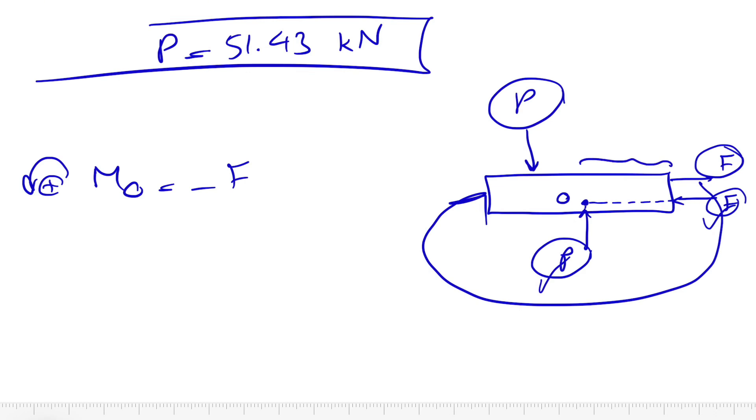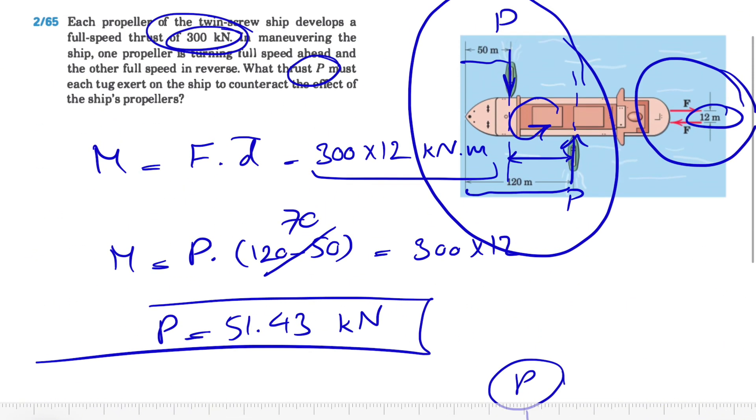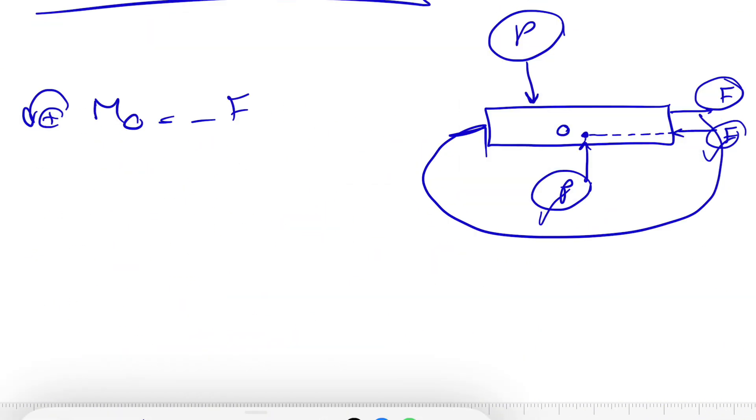And the distance that we are interested in is the vertical distance to the line of action, which is what we have in here. From the question we know this distance is 12, so we have F times 12.